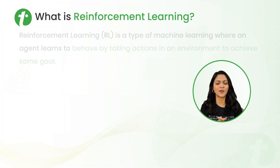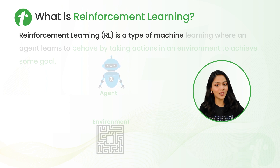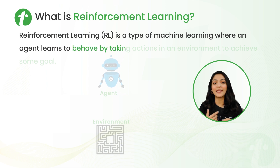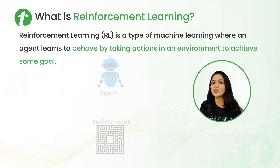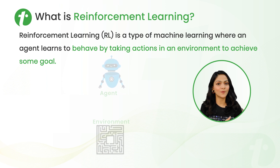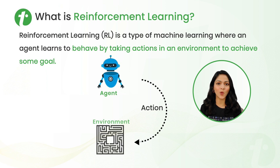Let's understand what is reinforcement learning. Reinforcement learning is a type of machine learning where an agent learns to behave by taking actions in an environment to achieve some goal. In supervised learning, we were providing labeled data to the model, and in unsupervised learning, we were providing unlabeled data. But in reinforcement learning, we are not providing any labeled or unlabeled data. Instead, we have an agent that takes actions in a given environment and learns based on rewards or penalties.